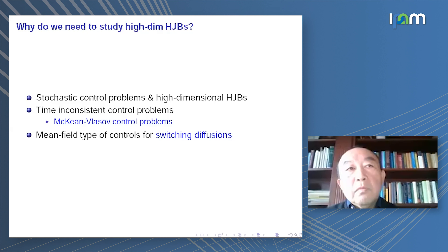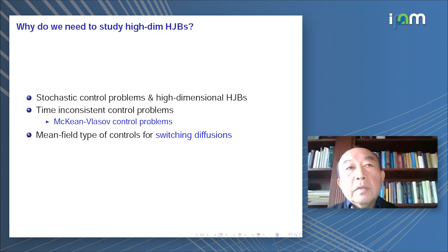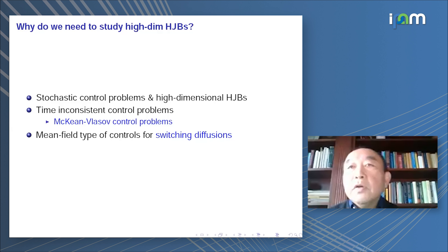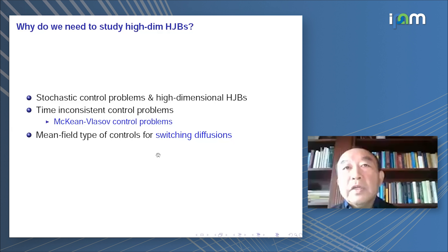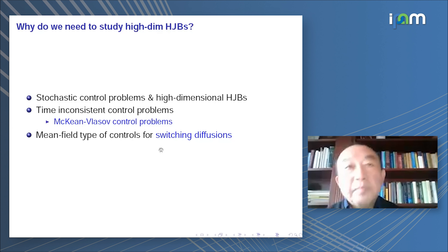The second problem I'm going to talk about is a specific example: time-inconsistent control problems. Then the next one is the mean field type of control for switching diffusions. What I'm going to talk about on this topic is quite new — we have just done that pretty recently, so I thought it would be interesting to discuss.